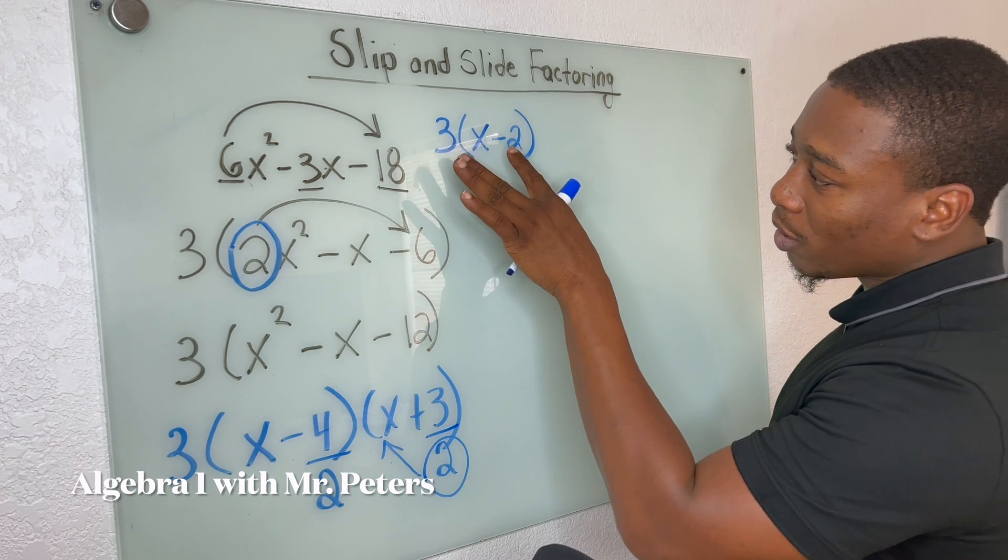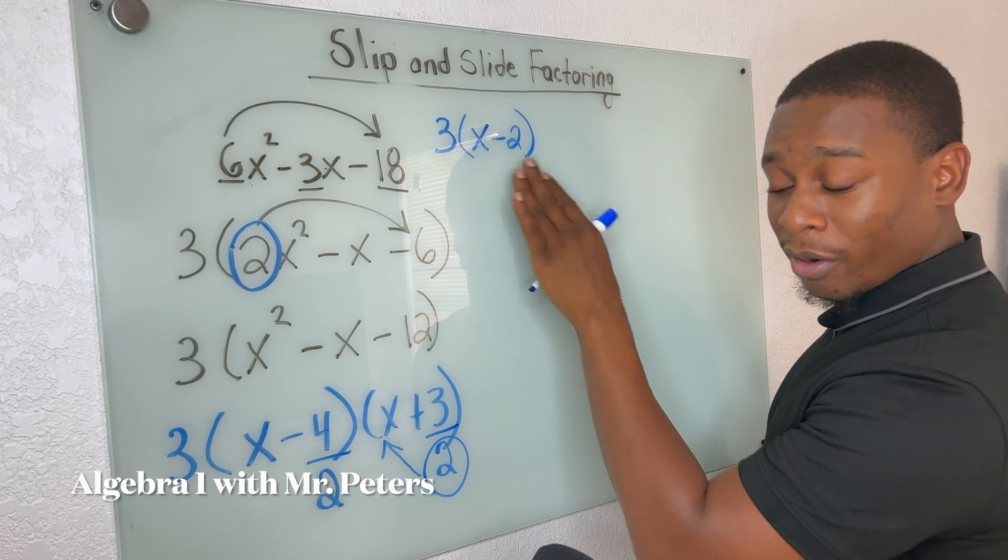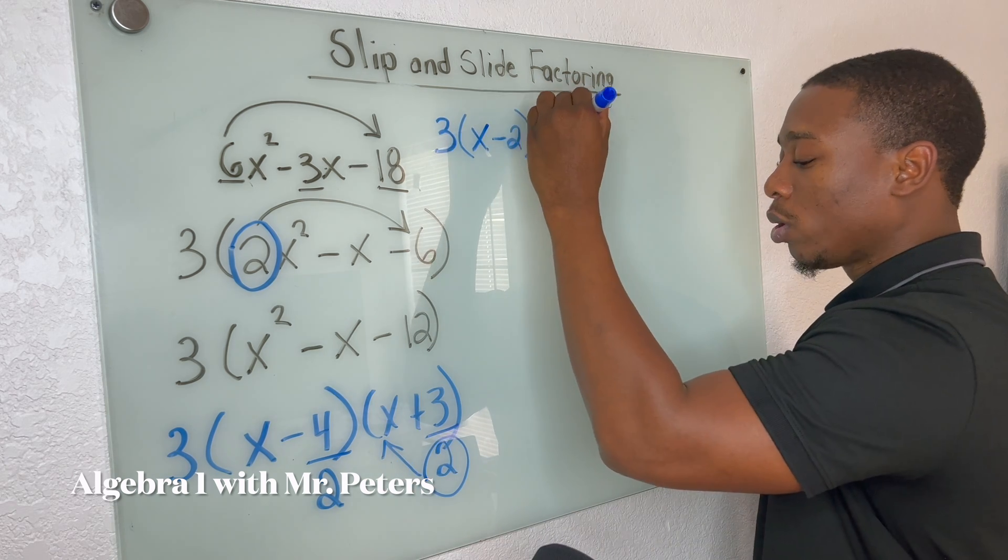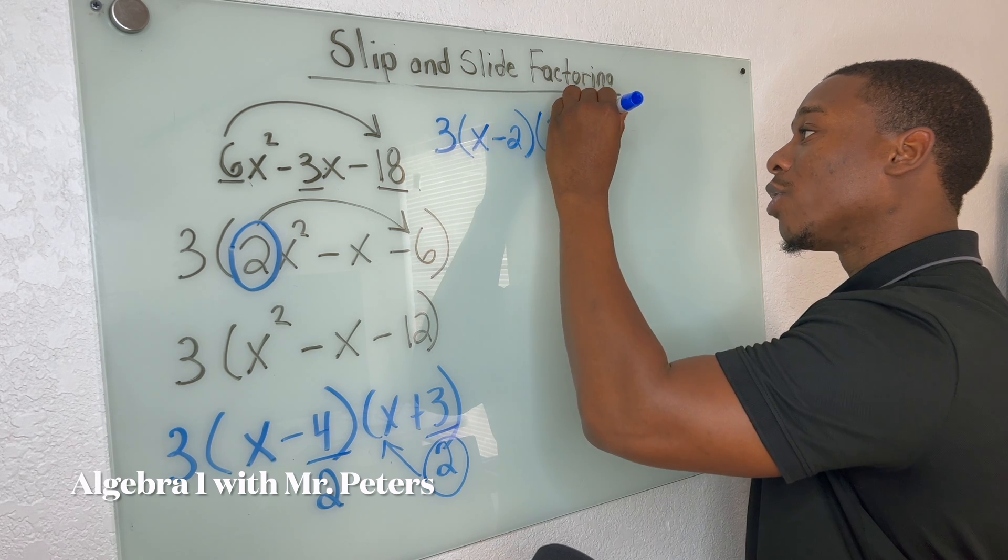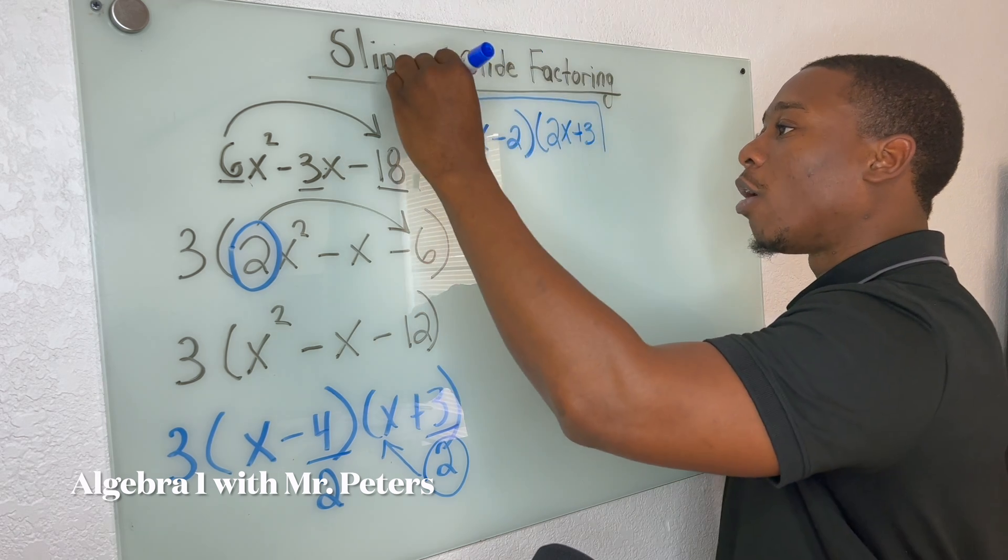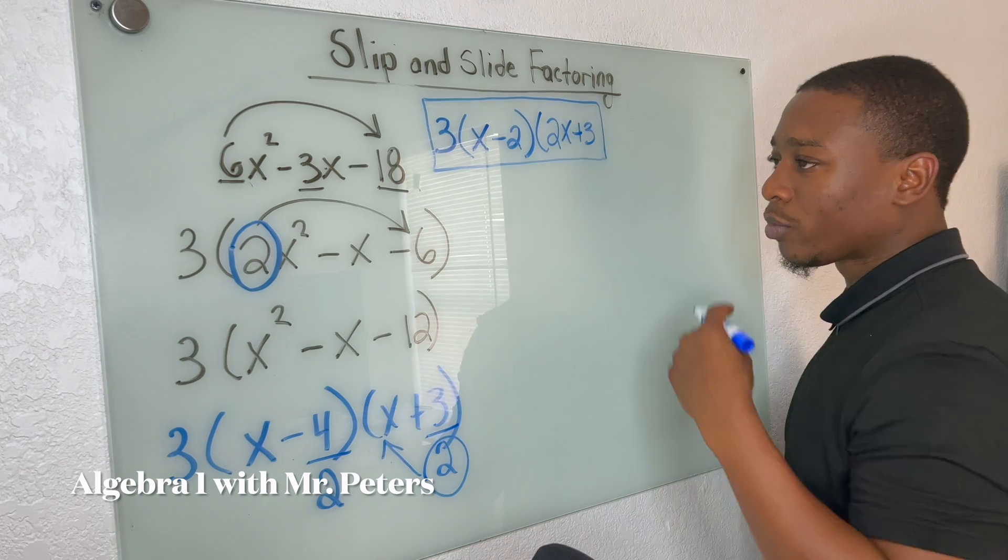So this is my first factor. Now, my second factor is going to be two X plus three. And this would be our final answer.